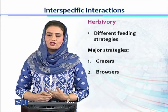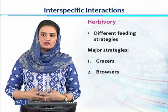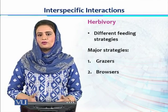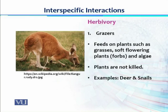Herbivory as a feeding strategy can be split into further different feeding strategies. The major strategies are grazing and browsing. Grazers are animals which feed on plant material such as grasses, soft flowering plants called forbs, and algae. They are utilizing plants belonging to the family Poaceae — different grasses. However, they are not killing those plants; they eat only a part of the grass, flowering plants, and algae, leaving the rest to replenish itself and sustain the ecosystem.